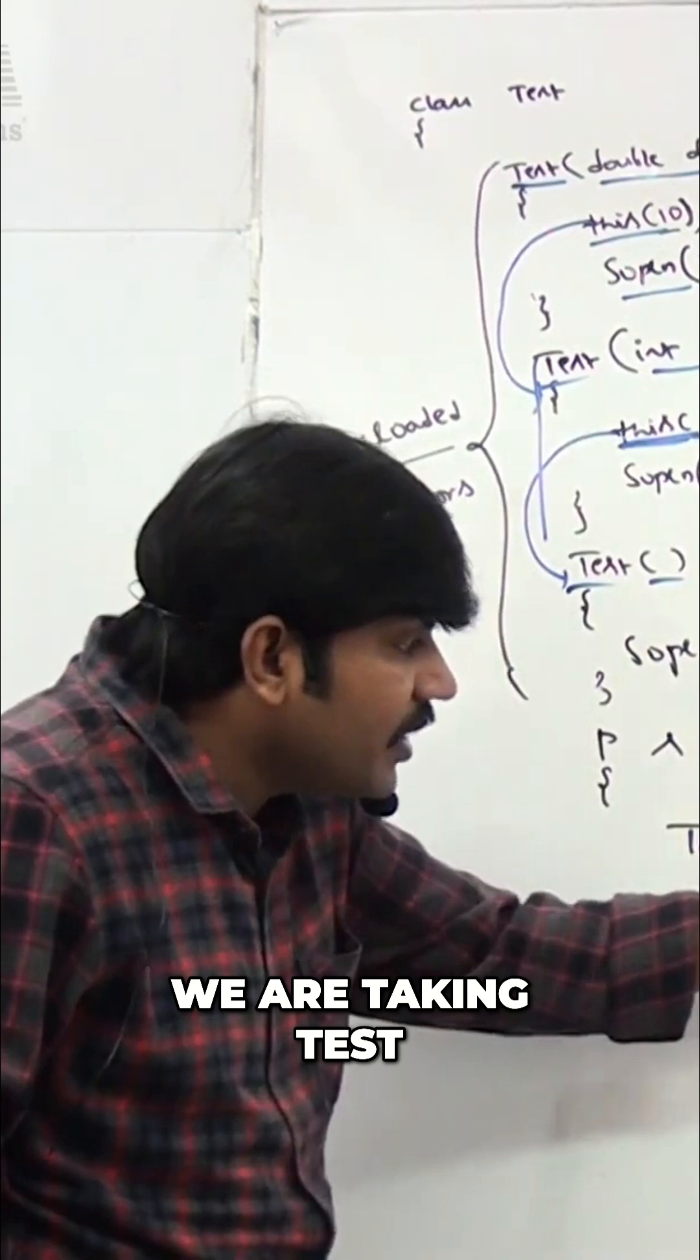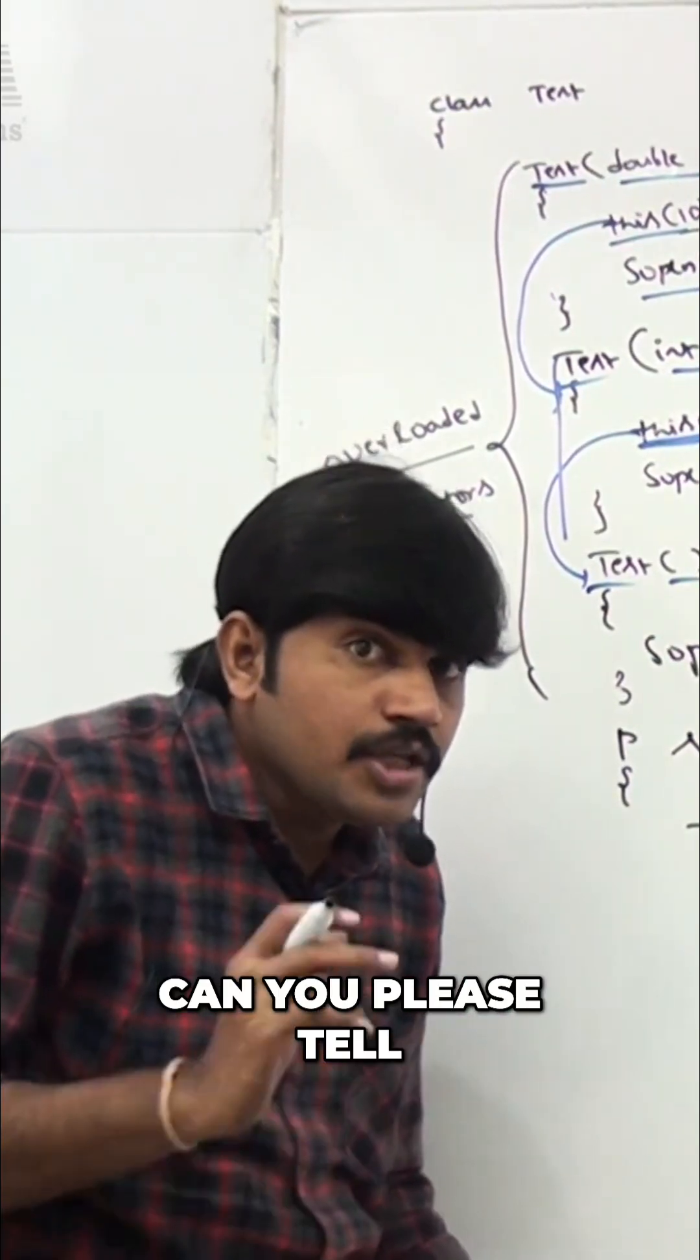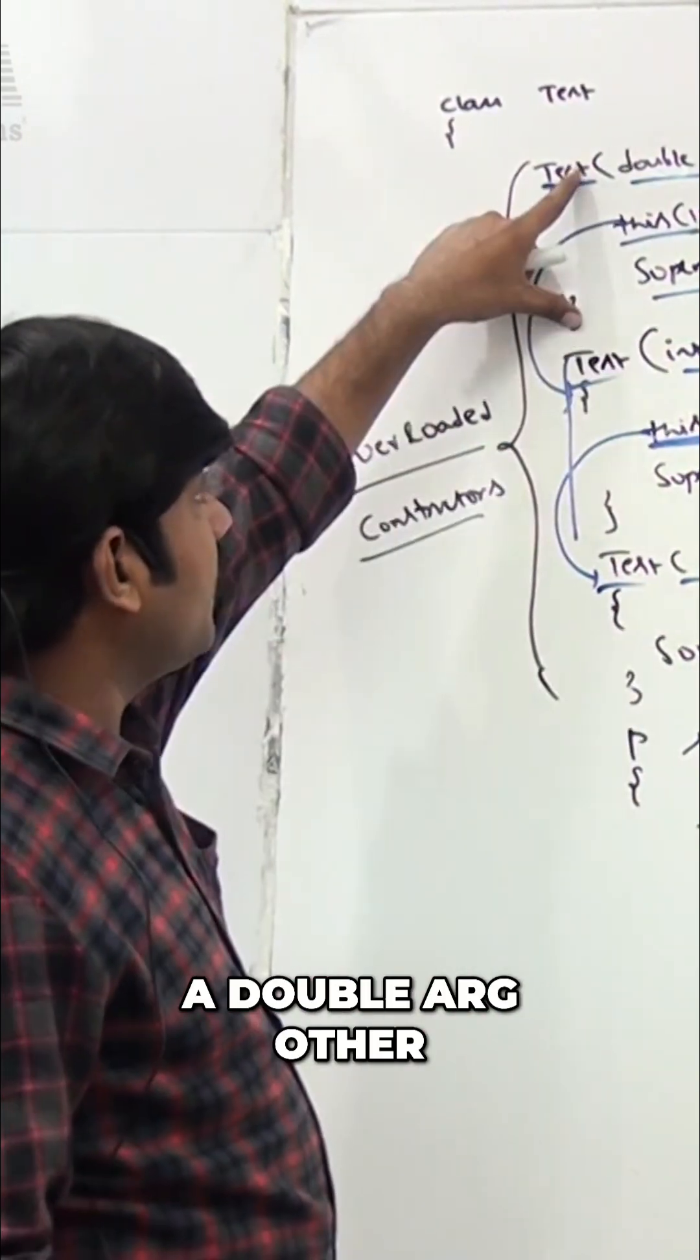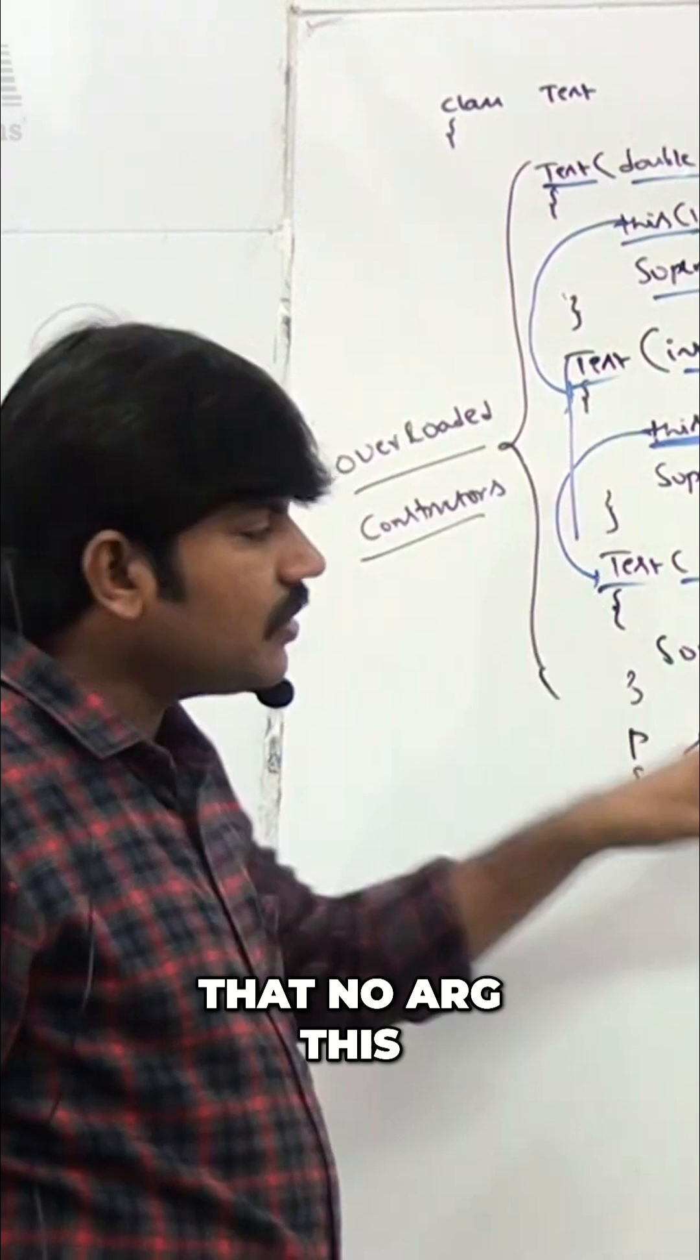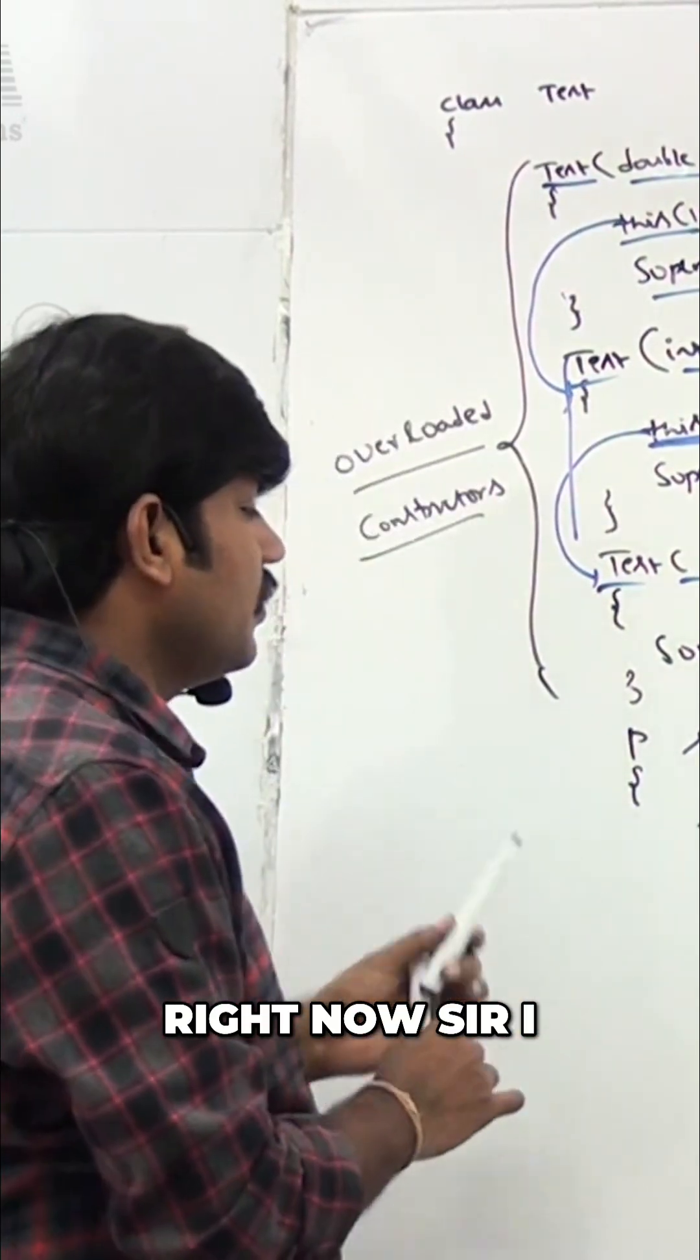Whenever we are taking Test t1 = new Test(10.5), can you please tell which constructor will be executed? First double arg - you are part of that int arg, you are part of that no arg. This is the output we have to get. Clear?